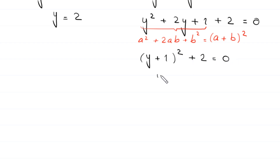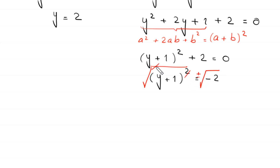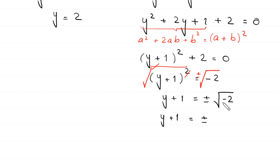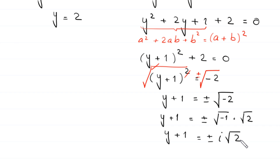Moving 2 to the right-hand side: (y+1)² = -2. Taking square roots of both sides: y+1 = ±√(-2) = ±√(-1)·√2 = ±i√2. Therefore y = -1 ± i√2.